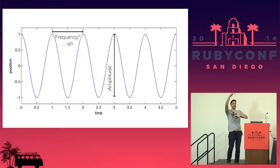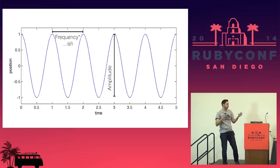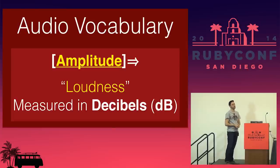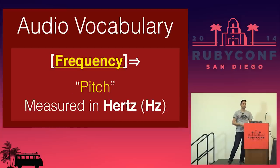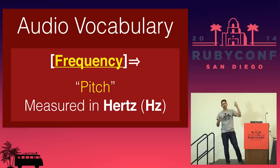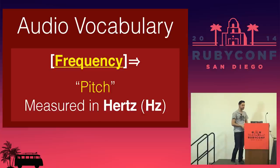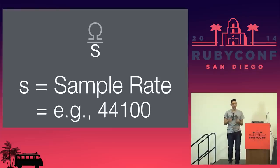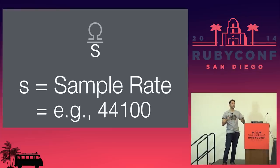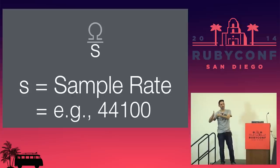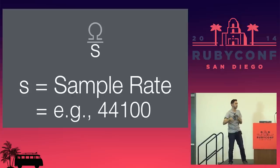Amplitude and frequency basically explain how we scale the sine wave, both in the horizontal and vertical axes. Amplitude makes it taller; frequency makes those peaks closer together. Amplitude controls loudness — how loud or quiet the sound is. Frequency is basically pitch — how high or low it is. There's also an S value, which is our sample rate, scaling the mathematical function so that t equals one second equals 44,000 samples.